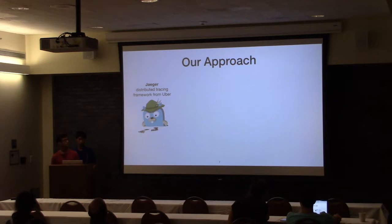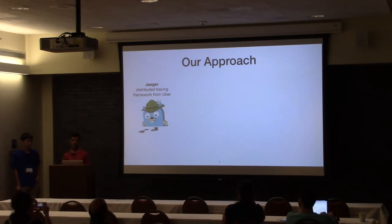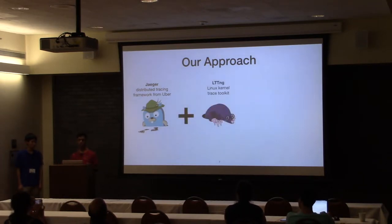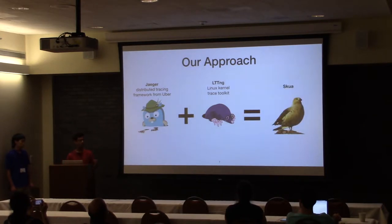So how did we approach this issue? We started with the Jaeger distributed tracing framework. It's a tracing framework built by Uber, released to the open source community very recently. It's a fairly mature system, actually used in production by Uber as their own tracing infrastructure. To this, we added LTTNG, which is a Linux kernel trace toolkit built to gain visibility into the syscalls and kernel events that are generated while an application is running. When we combine these two, we get SCUA.